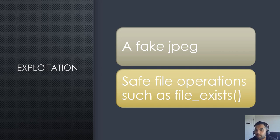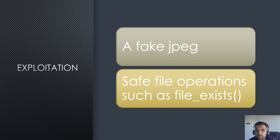Functions like `fopen`, `include`, `file_get_contents` are pretty critical and developers pay attention to securing them. But `file_exists` — I don't think everyone will pay much attention to that. So what we simply need to do is create a fake JPEG file, put the malicious code inside it, upload it, and hope to find a `file_exists` call — then it'll deserialize the PHAR archive and execute the remote code.